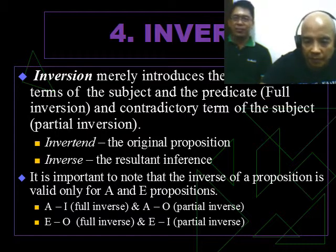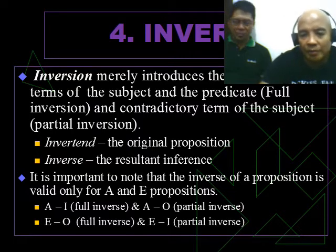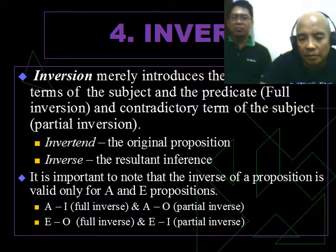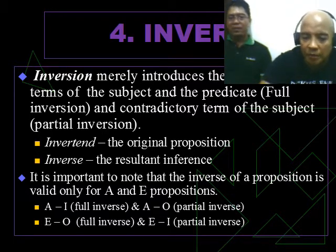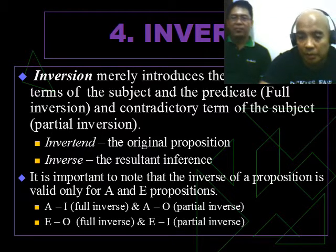From the word itself, when you invert, it's the total turnaround. So inversion merely introduces the contradictory terms of the subject and the predicate. We call that full inversion, and the contradictory term of the subject, partial inversion.